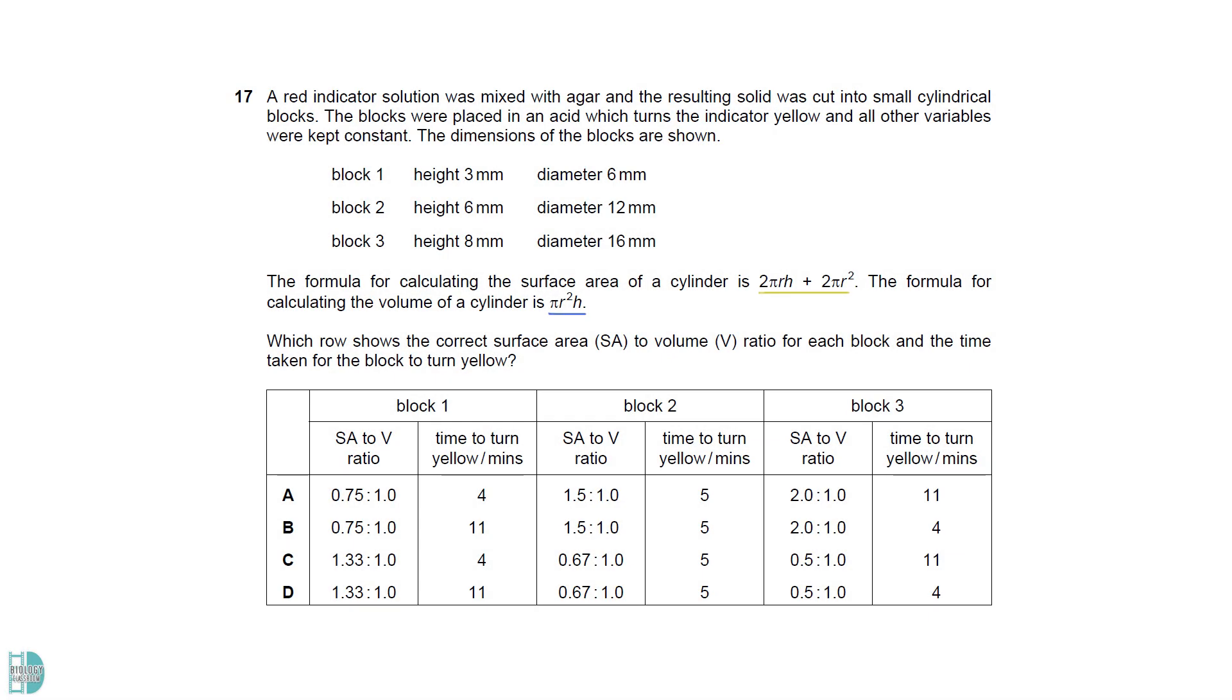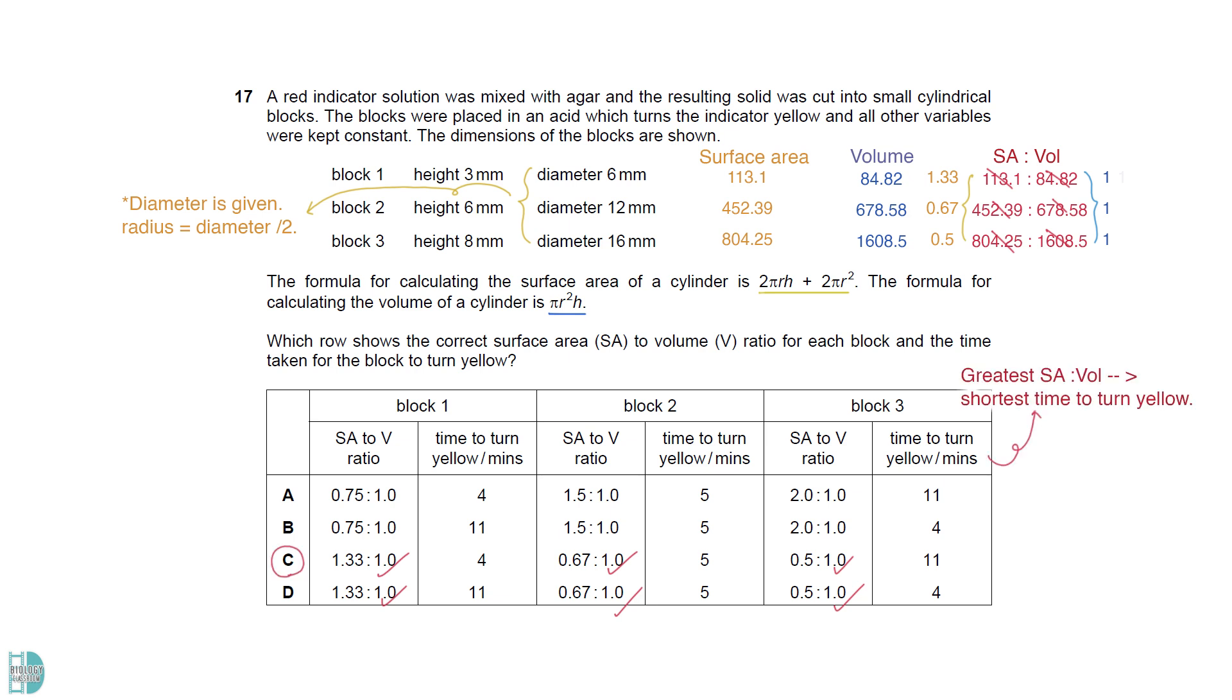Use the formula given to calculate the surface area and volume of each cylinder. Note that the diameter is given here. You have to divide them by 2 to get the radius. Then, get the simplest ratio where volume is expressed as 1. The cylinder with the greatest surface area to volume ratio should take the shortest time to turn yellow.